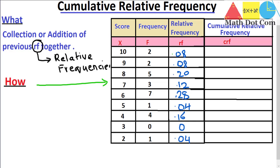Cumulative relative frequency is the addition of the previous relative frequencies together. We start from the bottom. At the bottom we have a relative frequency of 0.04. We don't have any relative frequency before this, so the cumulative relative frequency will also be 0.04. Then we move upwards. The second last row has a relative frequency of 0, so we add 0 to 0.04 and it remains 0.04.